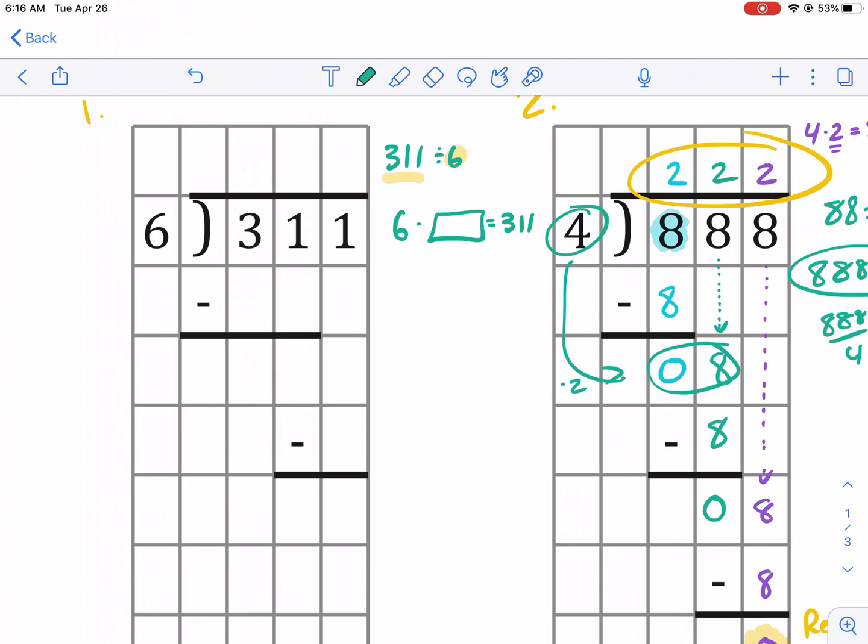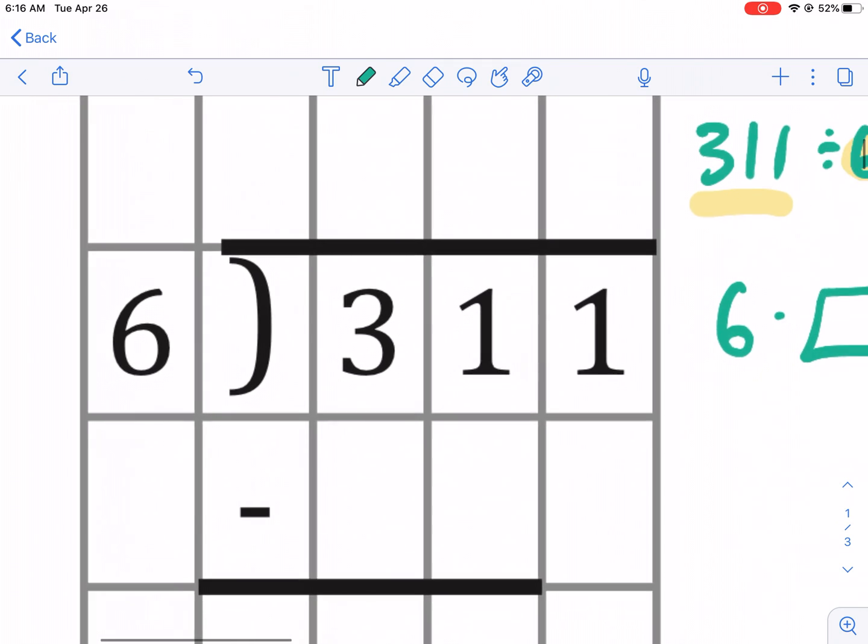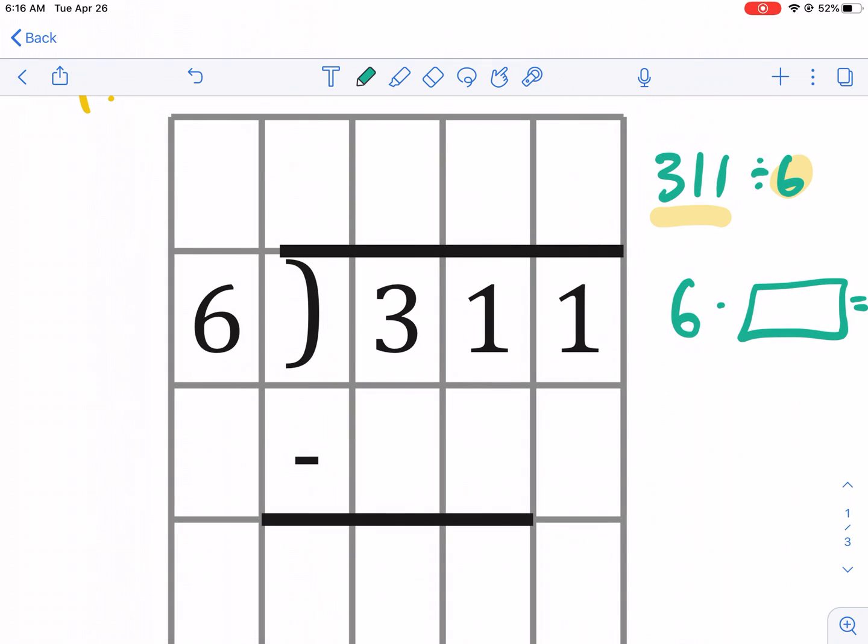First thing we want to do is we want to see six into the first digit. Does six fit into three? No, it's too big. This is what I was talking about being too big. Six does not fit into three. There's nothing we can multiply. No whole number we can multiply by six to get to three. It's too big.